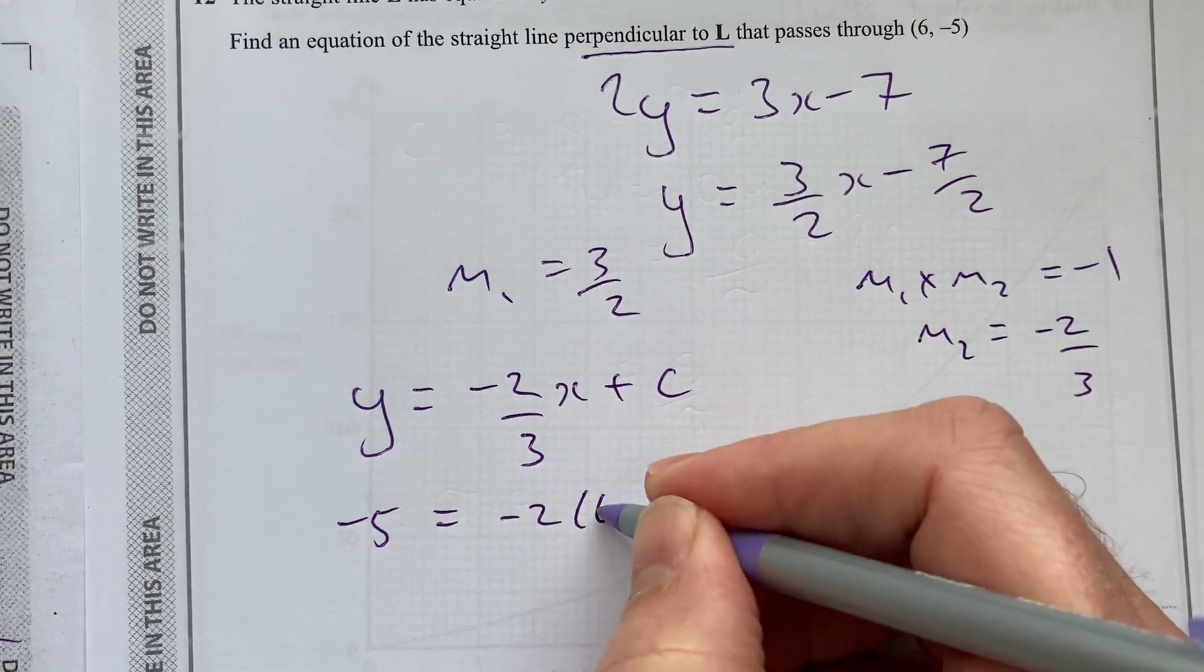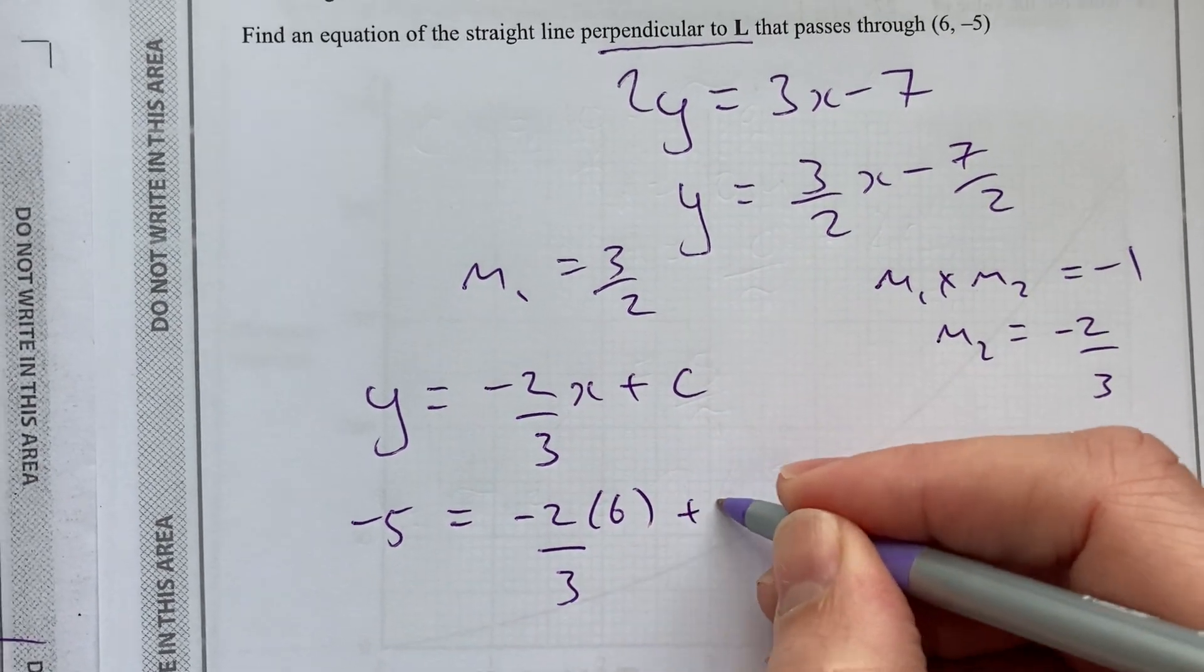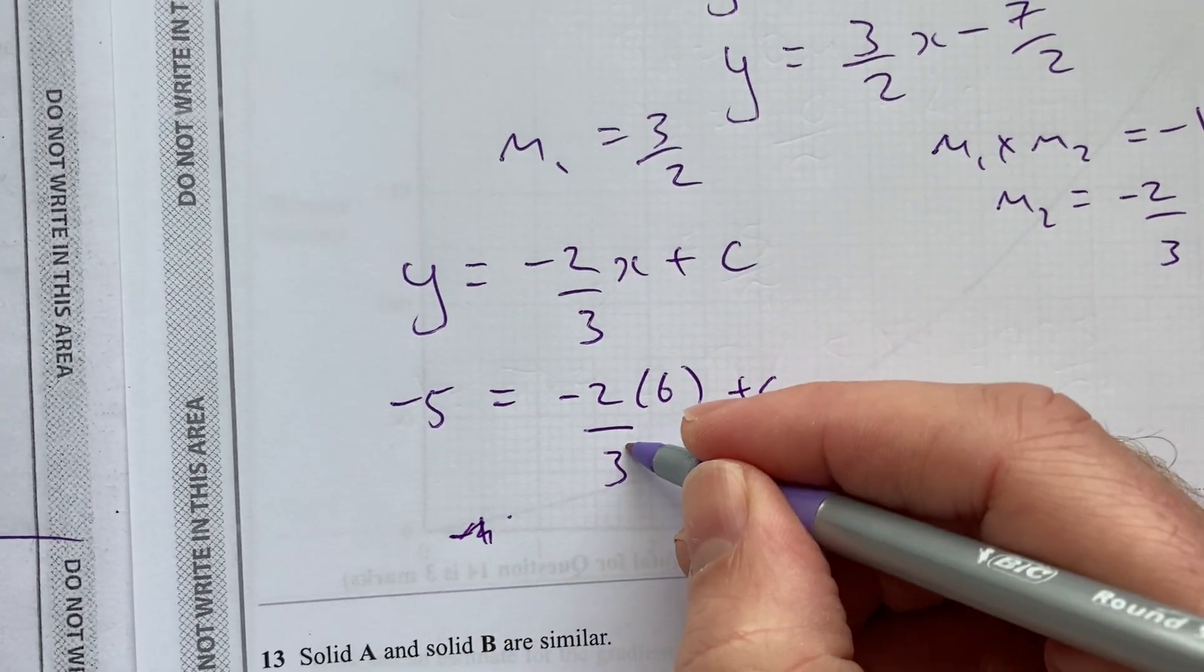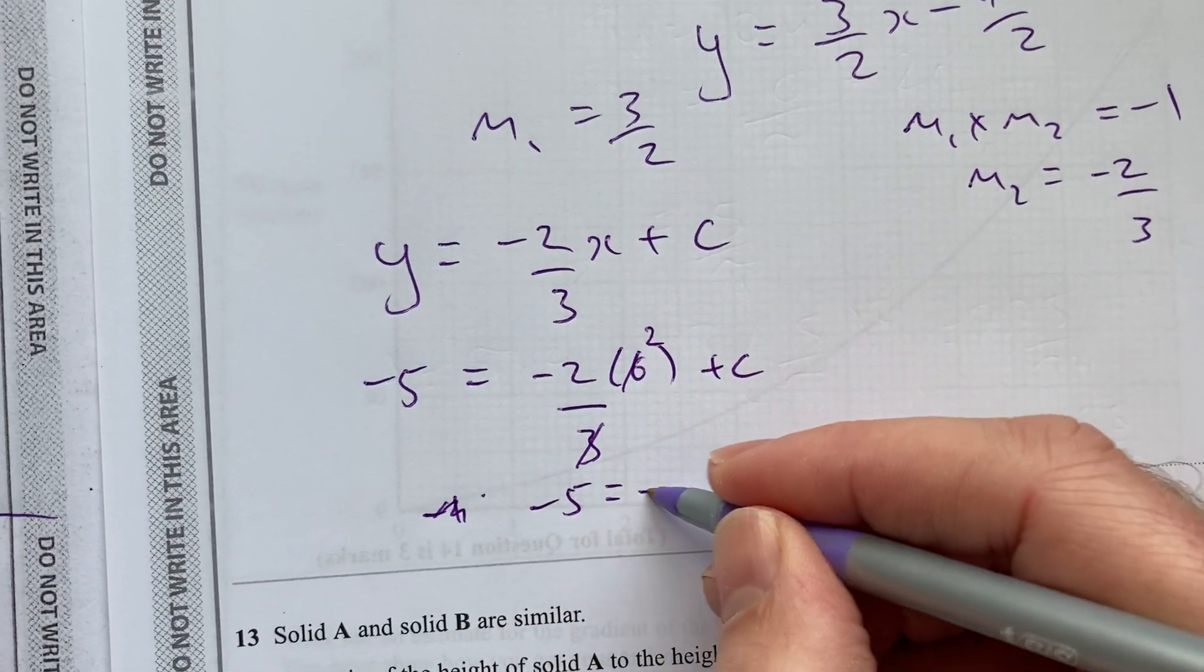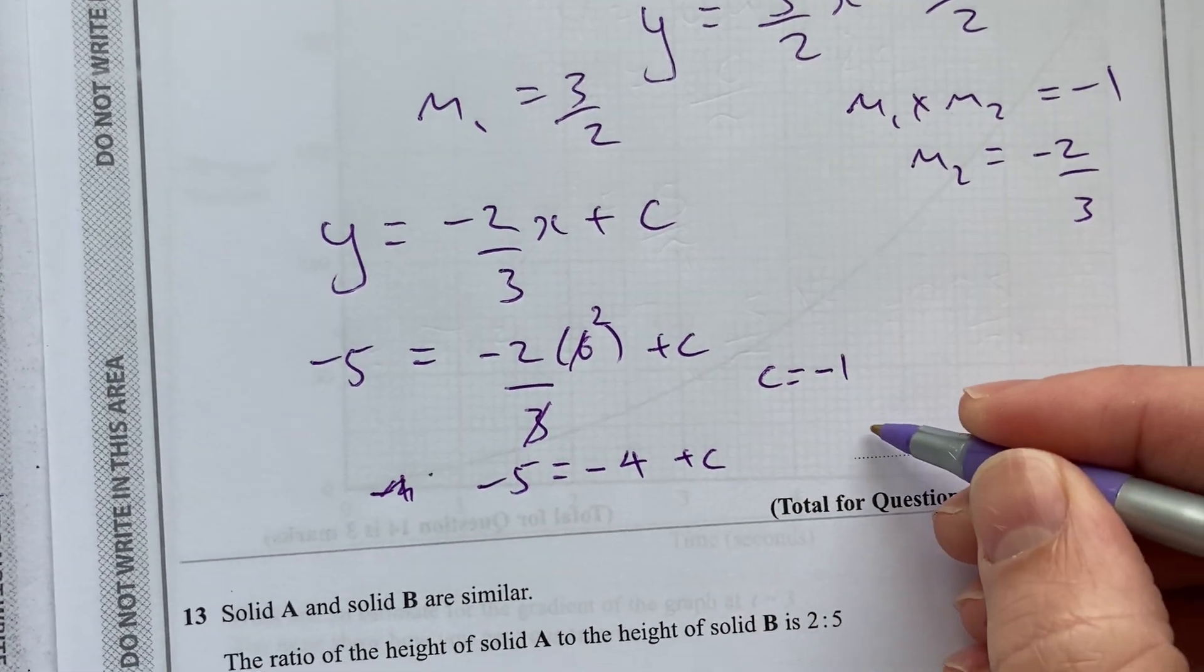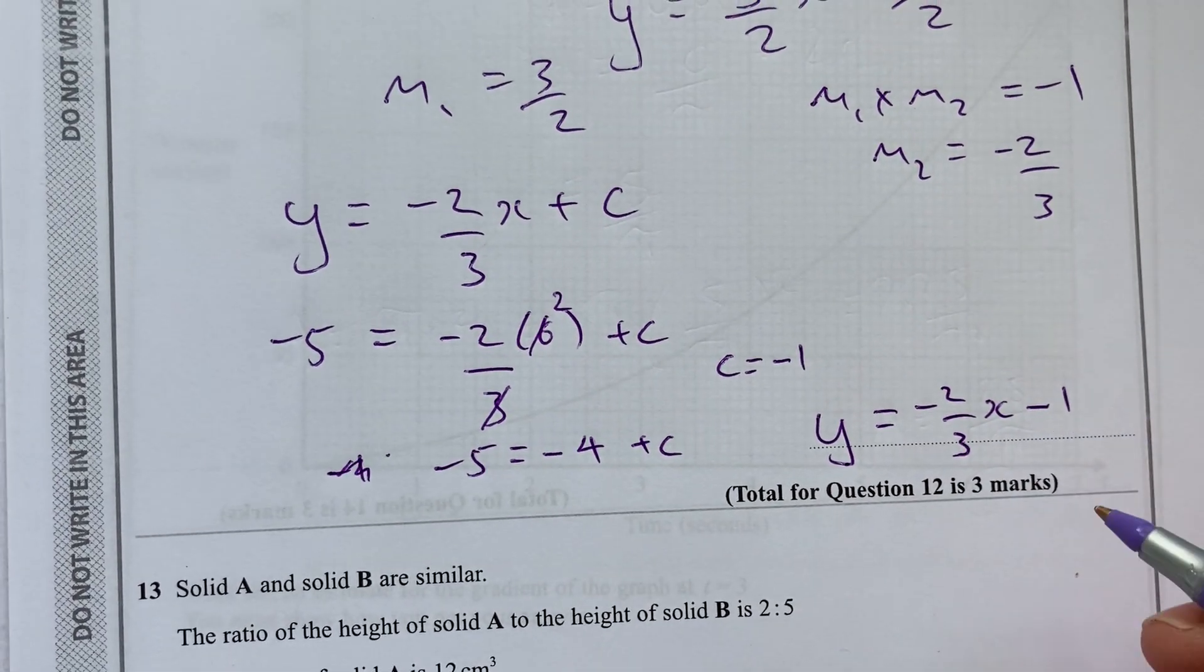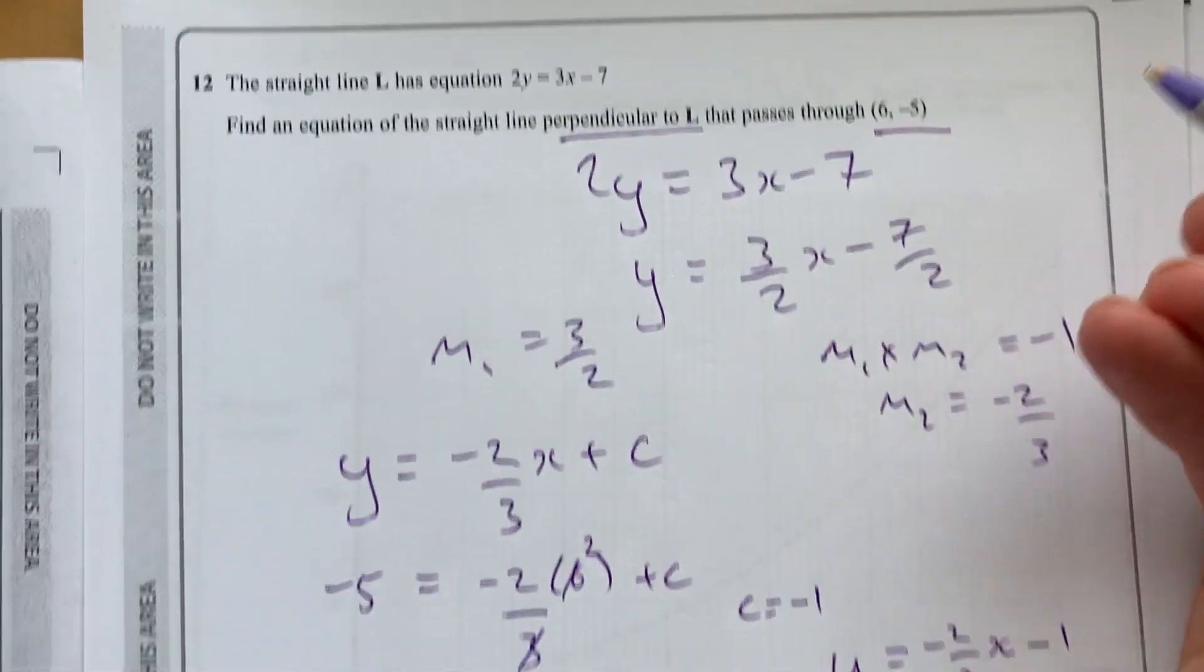I don't know what that c is yet. They've told us it must go through 6 and minus 5. So, let's use some substitution. Minus 5 equals minus 2 times 6 over 3 plus c. Minus 5 equal to minus 4 plus c. c is going to equal minus 1. So, my equation is y equal to minus 2 over 3x minus 1. So, that is the perpendicular equation that's going through that point there.